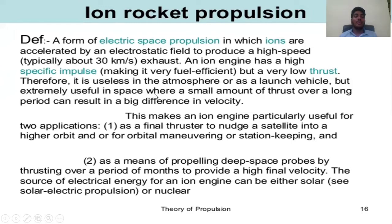Ion engines are extremely useful in space where a small amount of thrust over a long period can result in a big difference in velocity. Applications include: (1) final thrust to raise a satellite into a higher orbit or for orbital maneuvering and station keeping, and (2) propelling deep space probes by thrusting over a period of months to provide a high final velocity. The source of electrical energy for an ion engine can be either solar or nuclear.